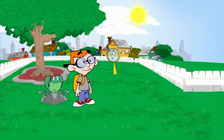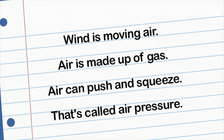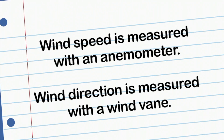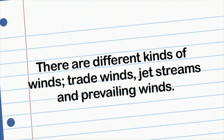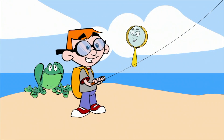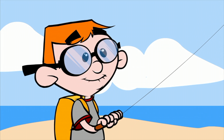You're very, very welcome! Today I learned a lot about wind! I hope you did too! These are the notes I took in my journal! Wind is moving air! Air is made up of gas! Air can push and squeeze — that's called air pressure! Warm air rises and cool air sinks! Wind speed is measured with an anemometer! Wind direction is measured with a wind vane! There are different kinds of winds: trade winds, jet streams, and prevailing winds! There are also sea breezes! The sea breeze is a kind of wind that helps me to fly my kite! Learning about wind was fun! Let's go on another scientific adventure real soon!